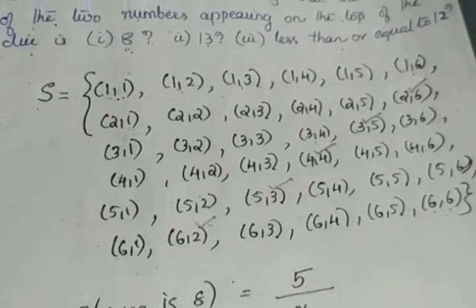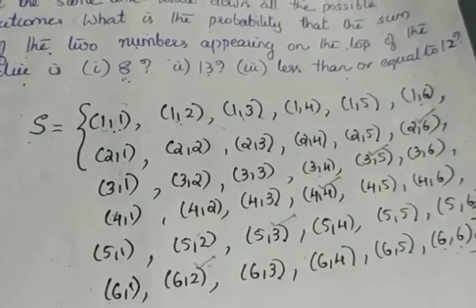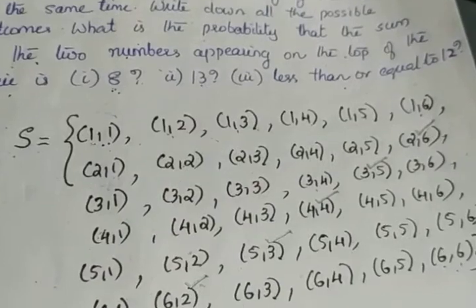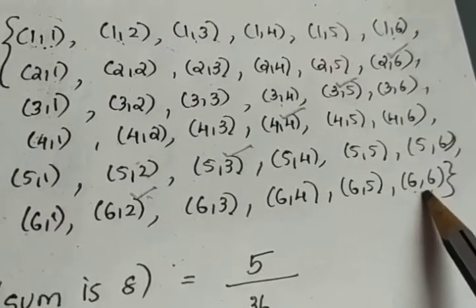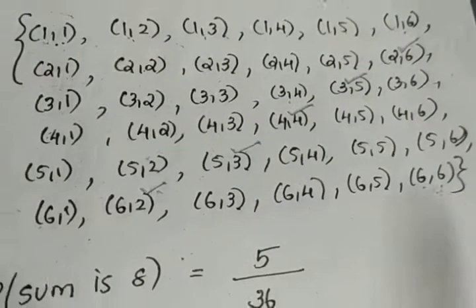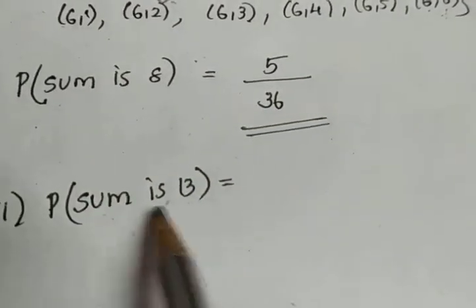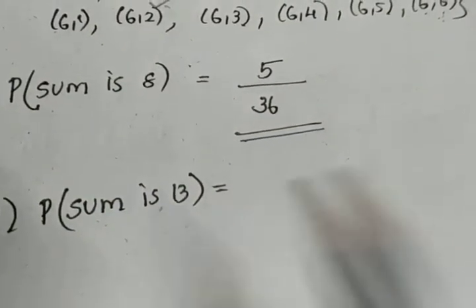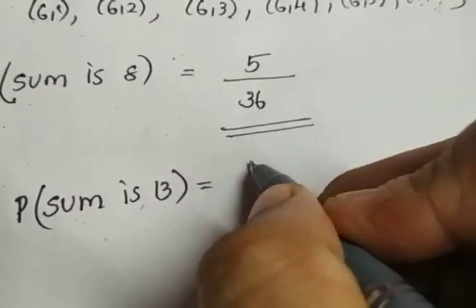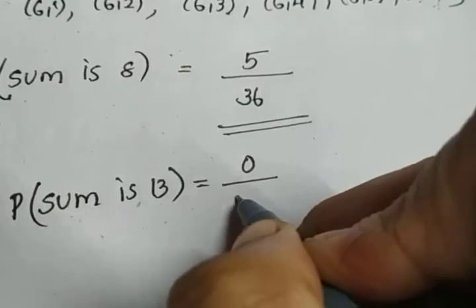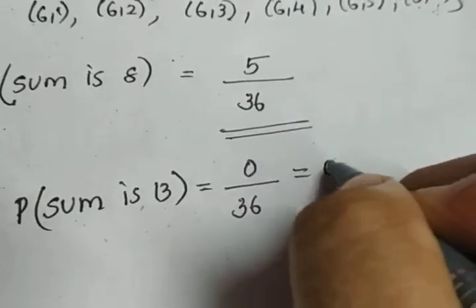Second part of the question is to find the probability that the sum is 13. Can you say? We already told in the beginning that the maximum possible sum is 12. So the question is to find the probability that the sum is 13. No event gives the sum as 13. So the number of possible events is 0 divided by total number of outcomes is 36, which gives you the value 0.